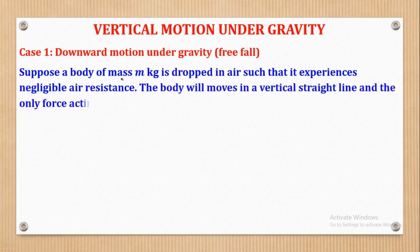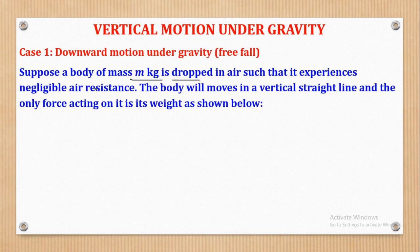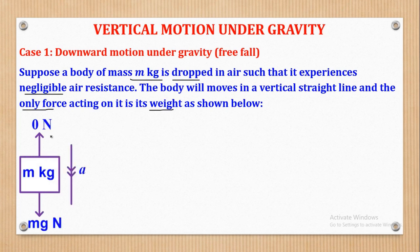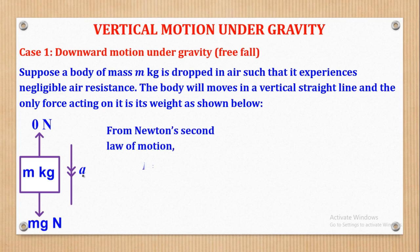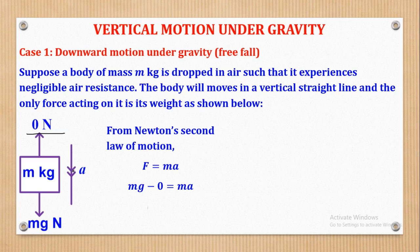In this case, we shall suppose a body of mass m kilograms dropped in air such that it experiences negligible air resistance. The body moves in a vertical straight line and the only force acting on it is its weight, which is mg, while other forces are equal to zero. The acceleration is in the direction of motion, which is downwards. Therefore, when I use Newton's second law, F equals MA, where F is the resultant force in the direction of motion, the resultant force will be mg minus zero, giving mg equals MA. When I make A the subject, I come up with A being equal to G.